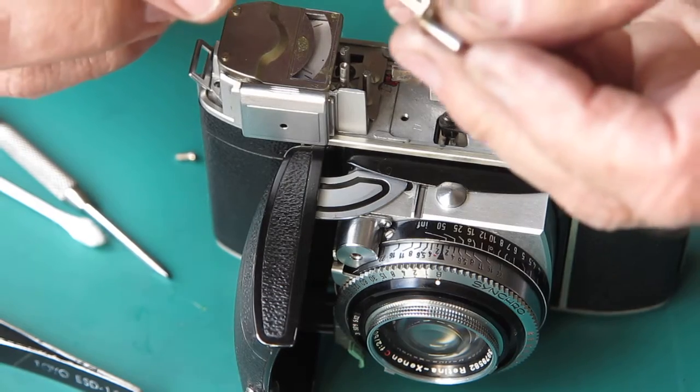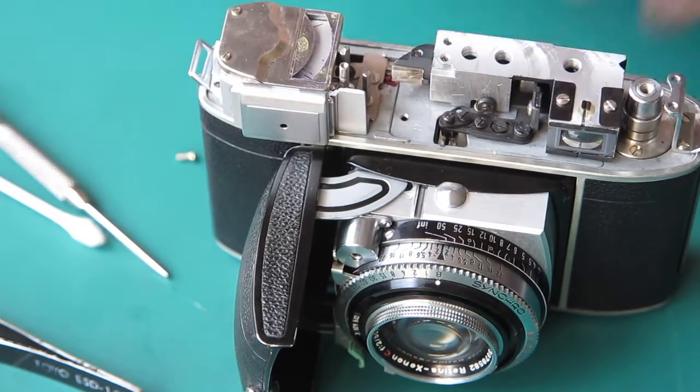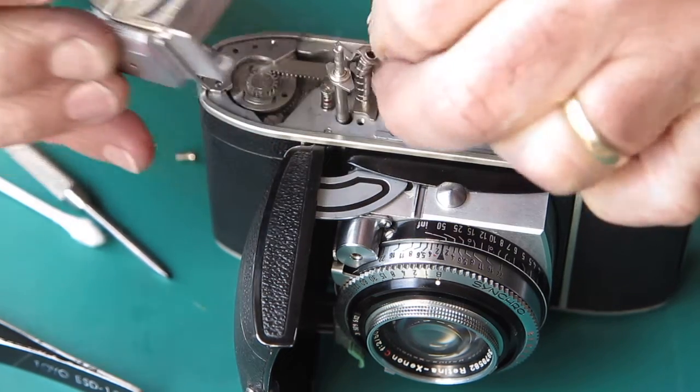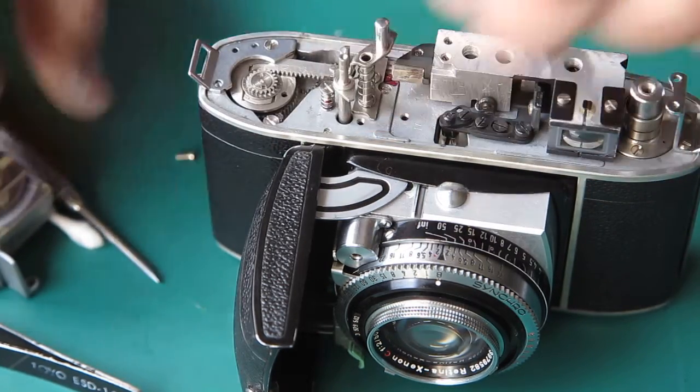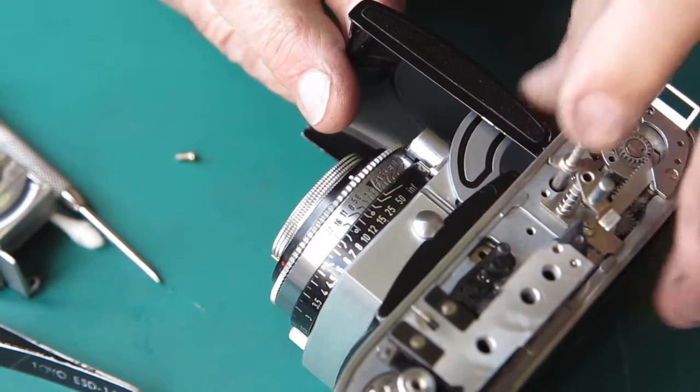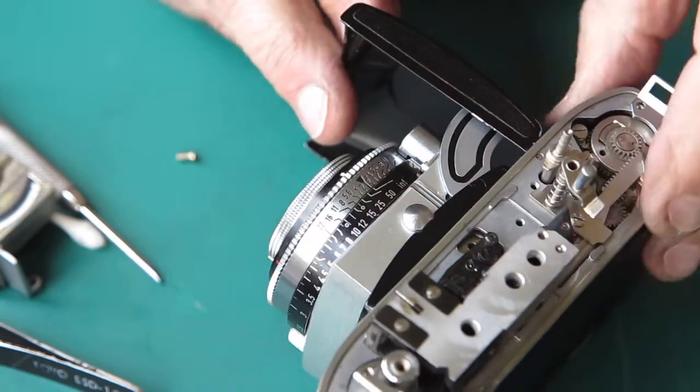I'll quick wipe molybdenum paste through there. Take the film release button, get that on there, and the shutter release is trying to get away there, so I've got to make sure that's sitting correctly. It is.